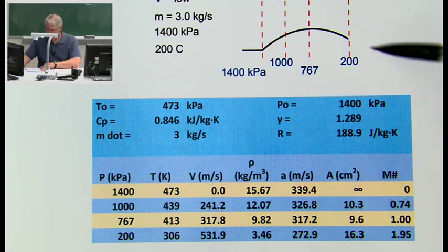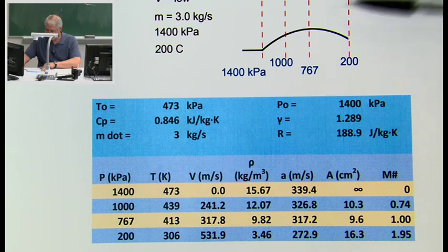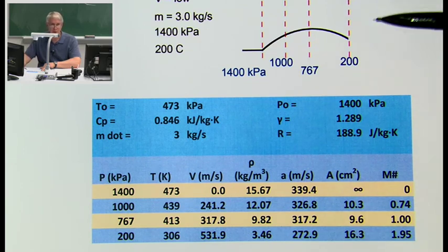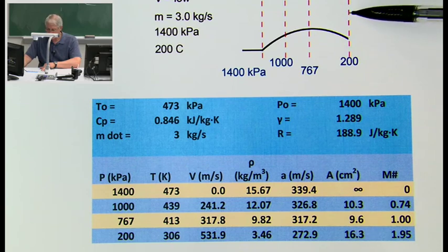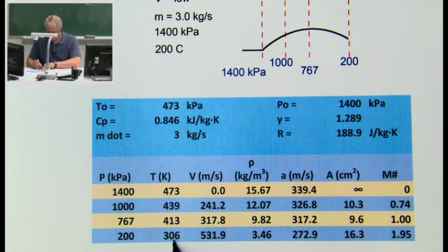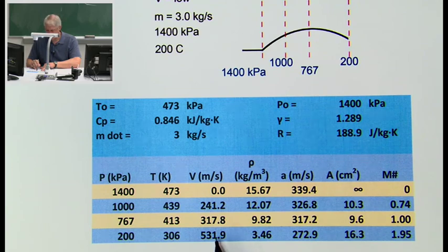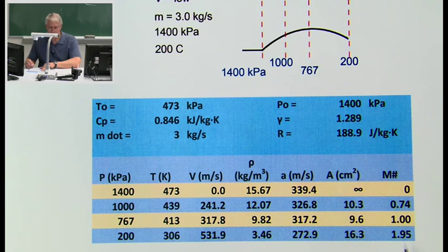At our exit point at 200 kPa, what we're used to seeing is that as the channel size increases, the velocity decreases. But look what's happened: the temperature went down and the velocity has continued to increase. The velocity at the exit is even higher than at the point of minimum area. The density has gone down, the speed of sound has gone down, and the Mach number at the exit is now 1.95 — it's gone supersonic.